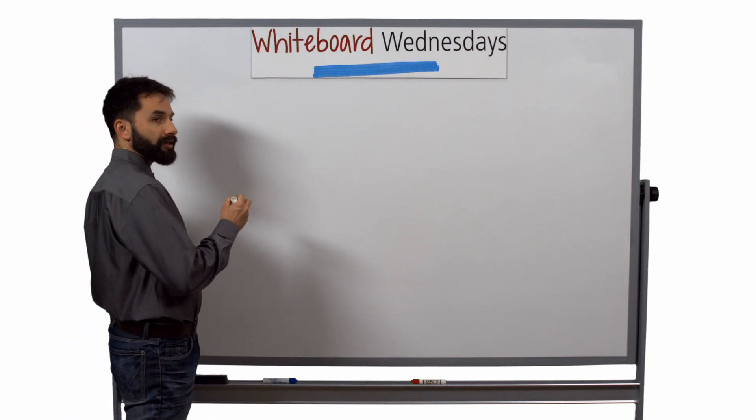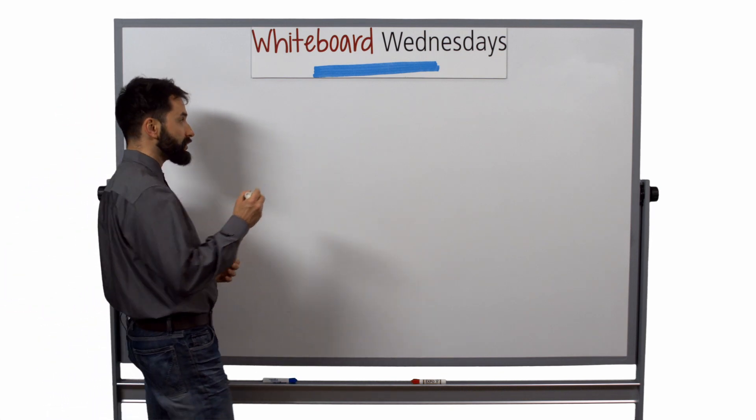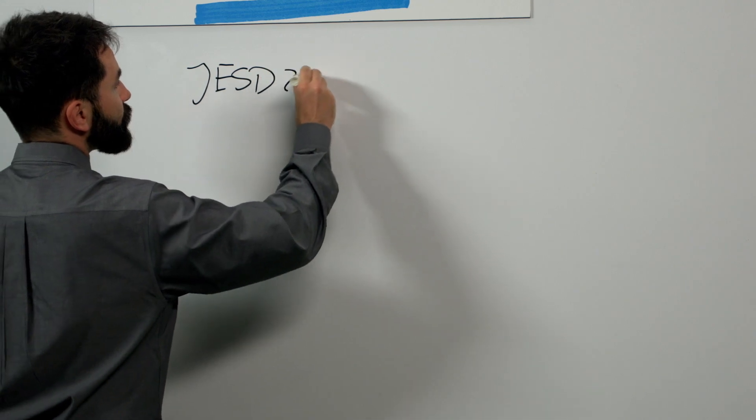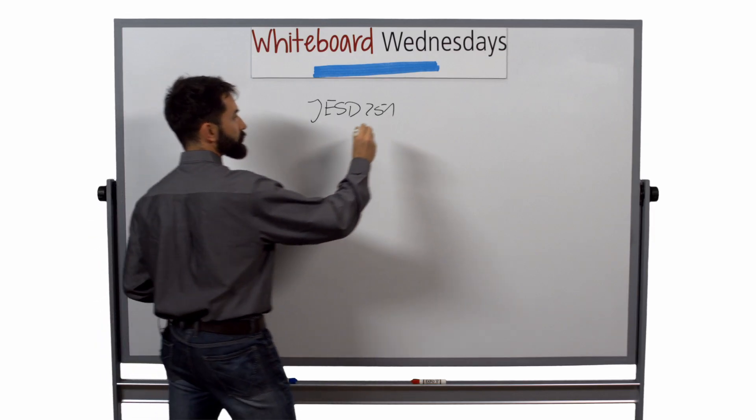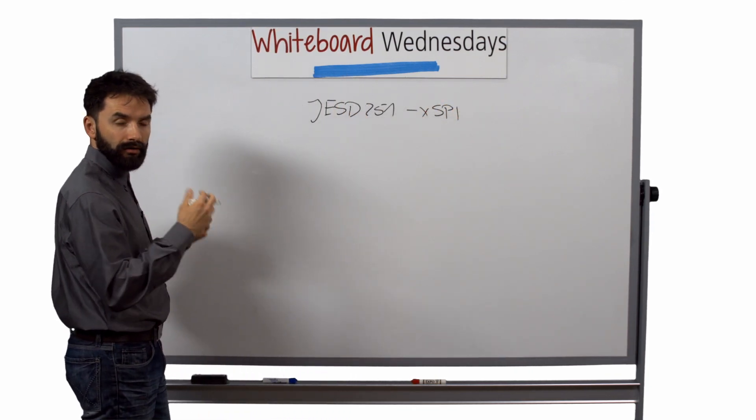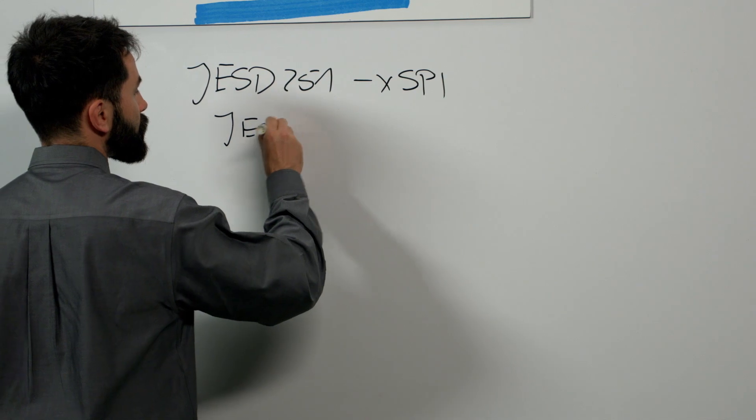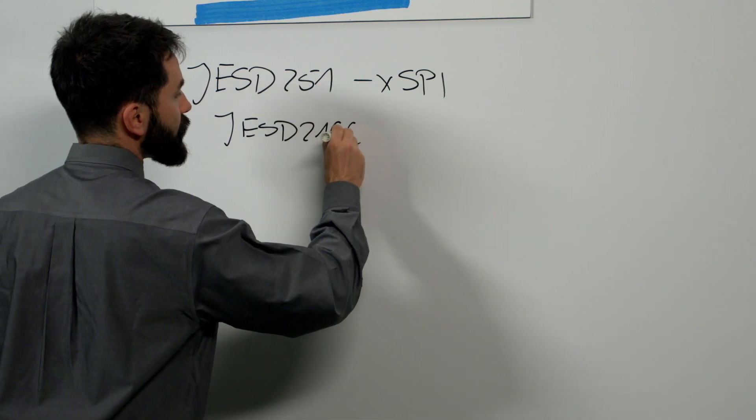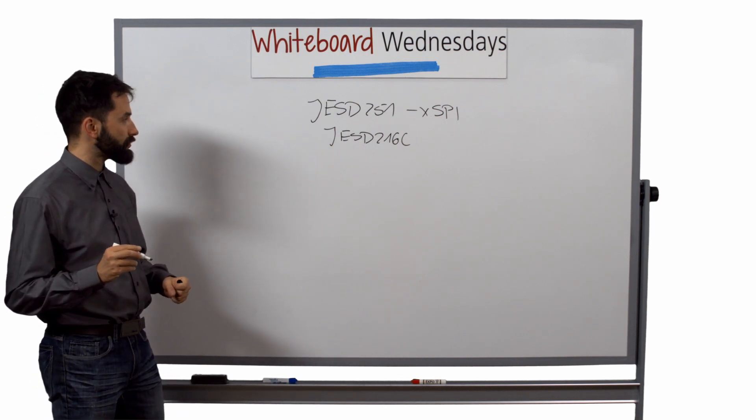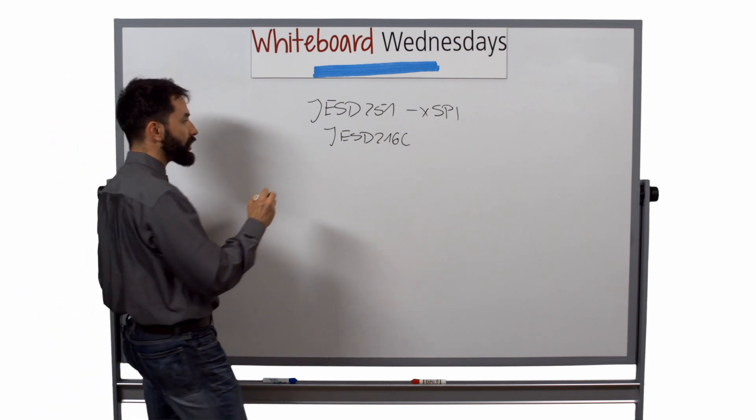The XSPI is actually the first standard to become an official JEDEC standard with the code name of JESD251. That's the official XSPI. And then there's also another JEDEC standard, JESD216C, that's also providing some of the functions included in the standard.